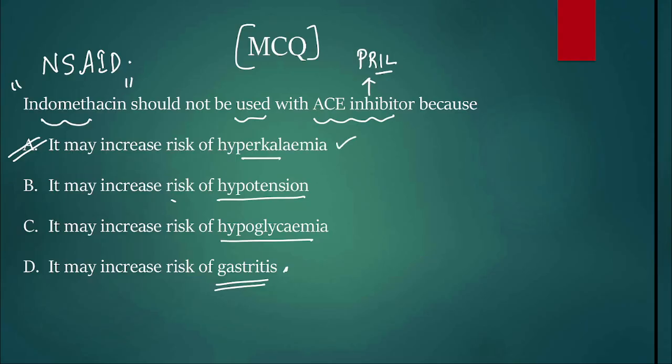So when we combine them, there's an increased risk of hyperkalemia. It may increase the risk of hypertension? No. Hypoglycemia? No. Gastritis? No. In fact, if a patient is having hypertension and is on ACE inhibitor and I start giving NSAID, the ACE inhibitor will not reduce the BP properly - the antihypertensive effect will be blunted.